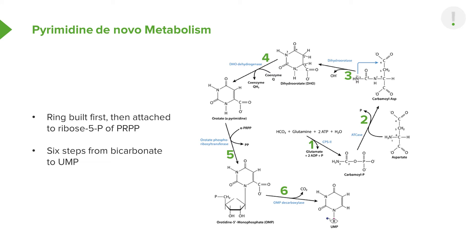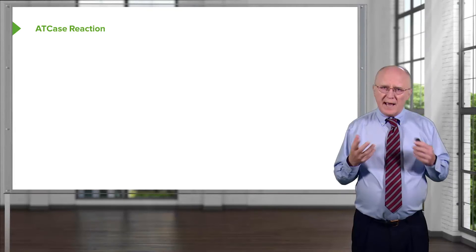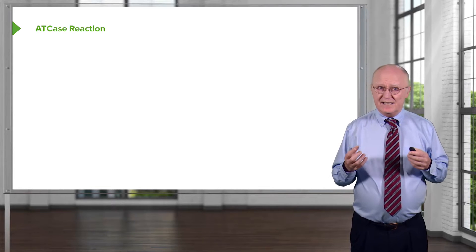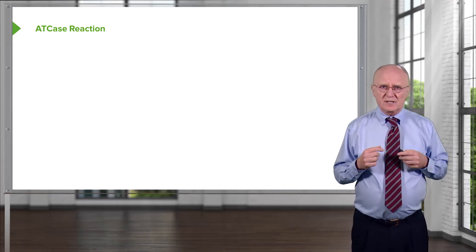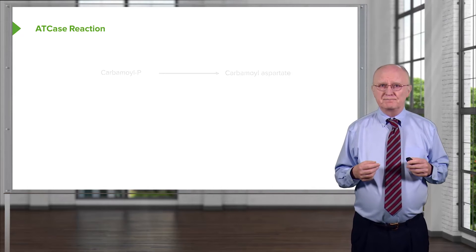Like the synthesis of the purines, we don't need to go through every step to understand what's happening in this process. There are two reactions I want to focus on so that you can understand better what's happening. The most important of these is reaction number two, which is catalyzed by an enzyme known as ATCase. I've described this enzyme in other lectures in this series, but I want to now focus on it with respect to balancing of nucleotides.